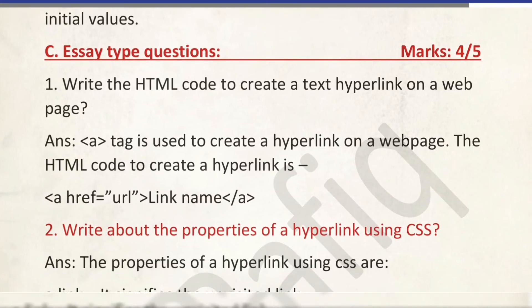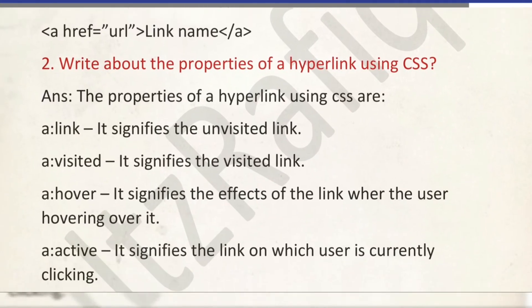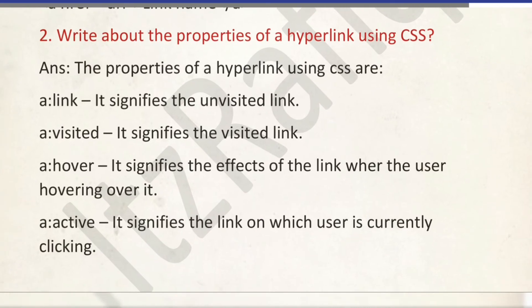Now long questions. Write the HTML code to create a hyperlink. We use anchor tag to create a hyperlink. The command will be: a href='URL' then name of the link then /a. Write about the properties of hyperlink using CSS. It will be a:link, a:visited, a:hover, and a:active. Definitions are already written — that one you can write.